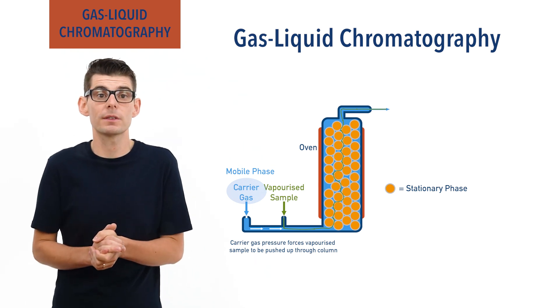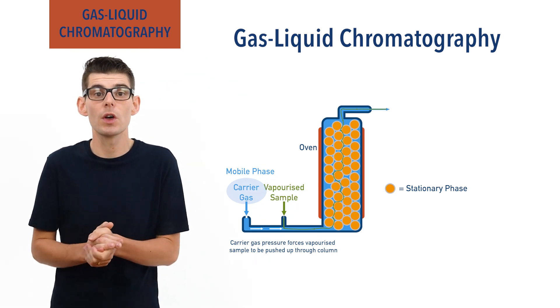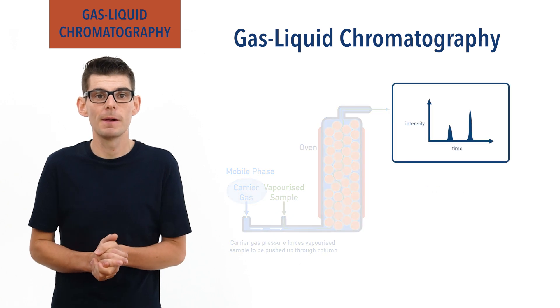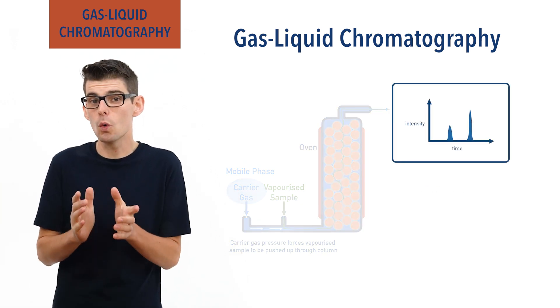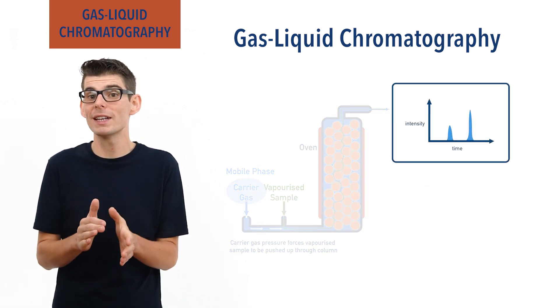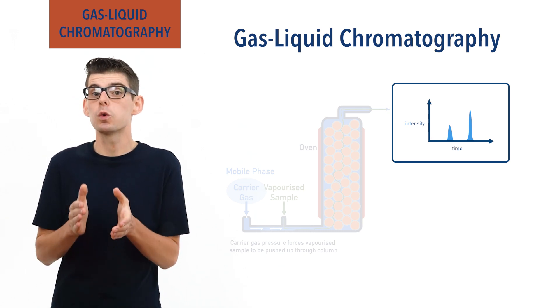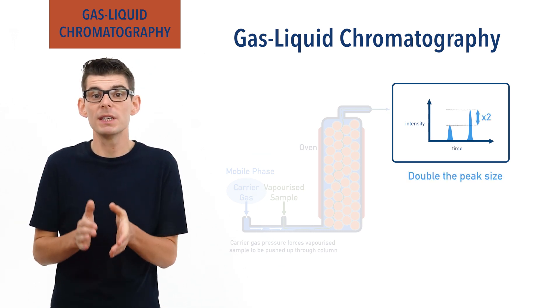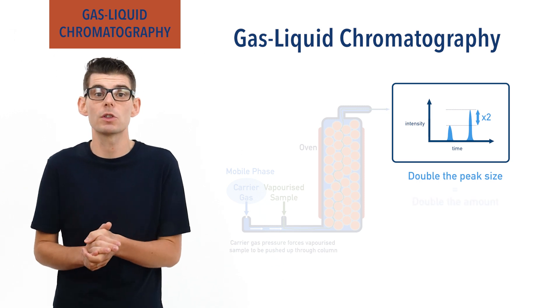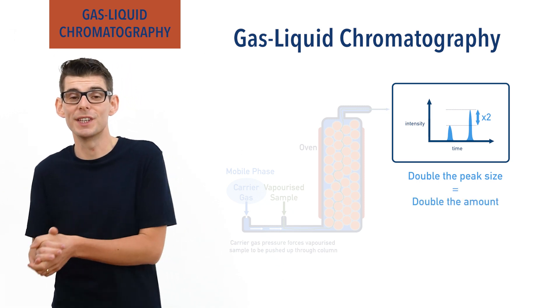All signals produced by a sample are printed onto a graph called a chromatogram. The sizes of the peaks also give information about the relative amounts of each substance in the mixture. A peak twice the size of another peak means the sample contained twice as much of that substance compared to the other.